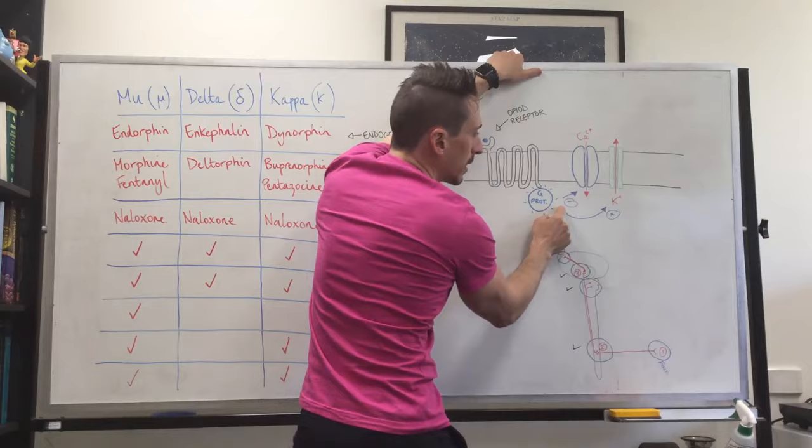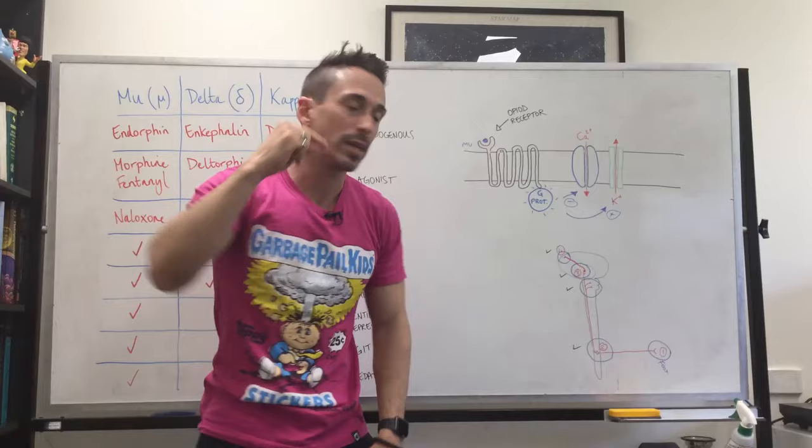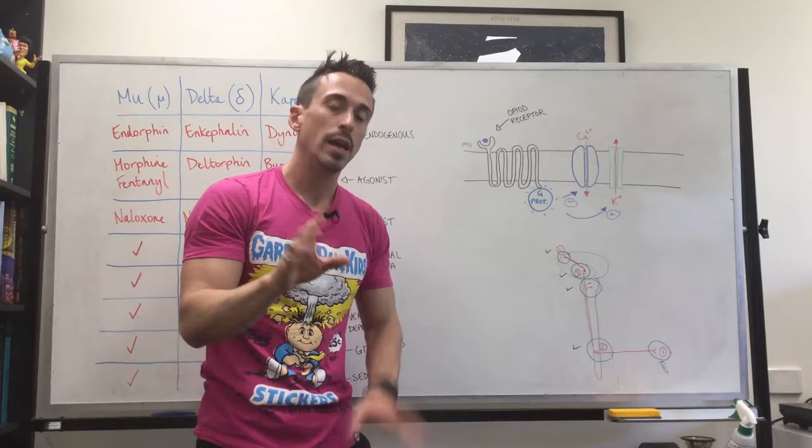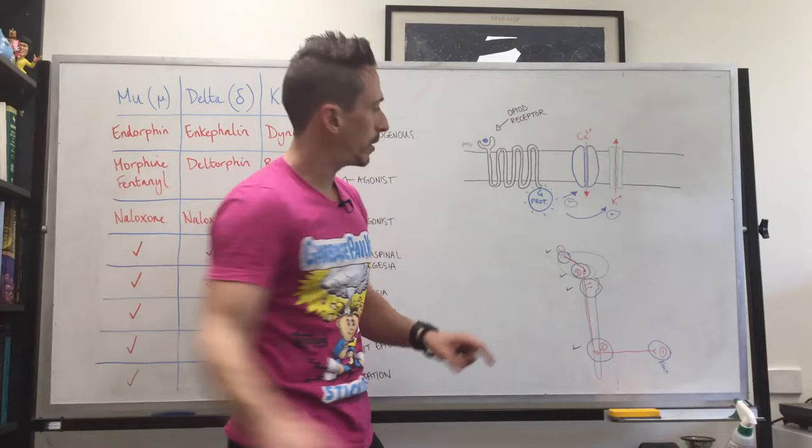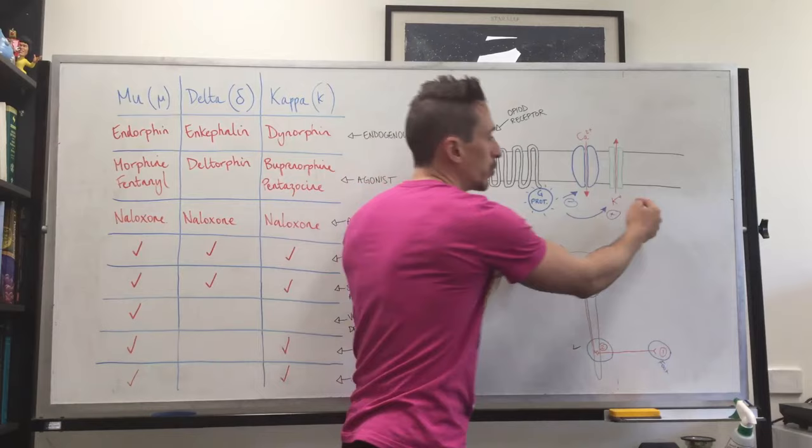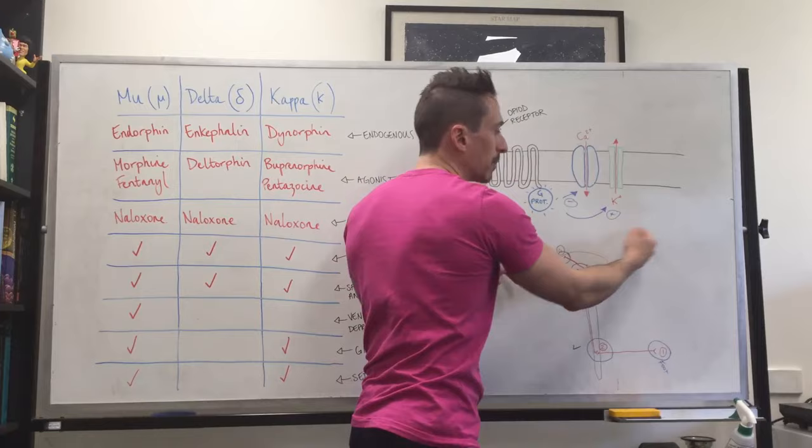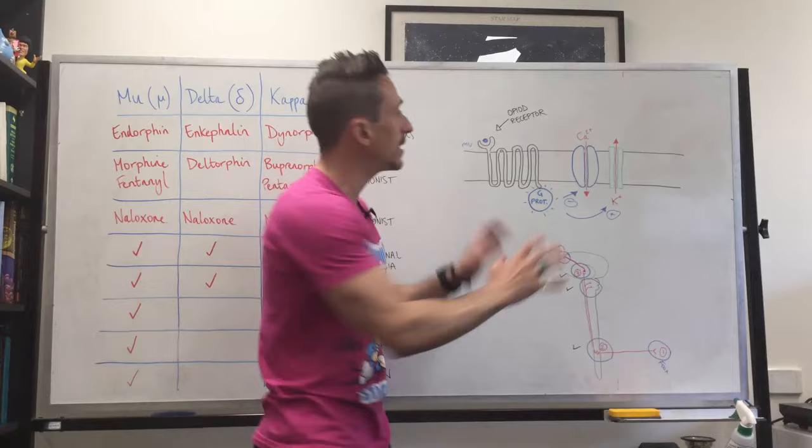It will travel to calcium channels and stop calcium from entering the cell. Any time a neuron becomes positive inside, it sends a signal. If you stop it from becoming positive, it stops sending the signal. So if we stop calcium coming in, it stops it from becoming positive—this is called hyperpolarization—and stops neuronal excitability. But there's another way: the G protein can activate potassium channels, which throw potassium out of the cell. If you're throwing positive things out, it becomes negative inside, again hyperpolarizing the cell and stopping the signal. This is how opioids and opioid receptors exert their effects in the central nervous system.